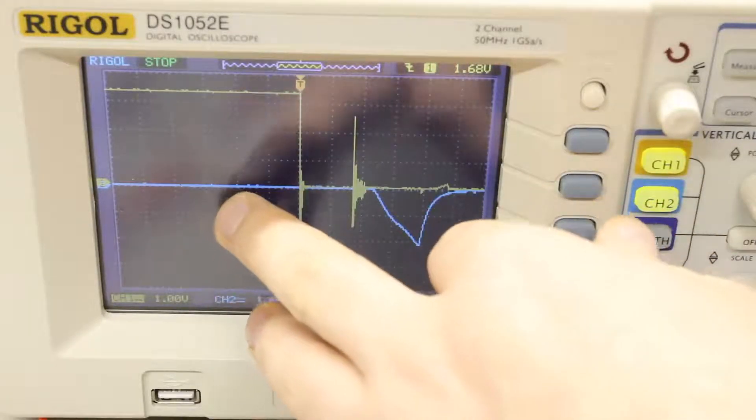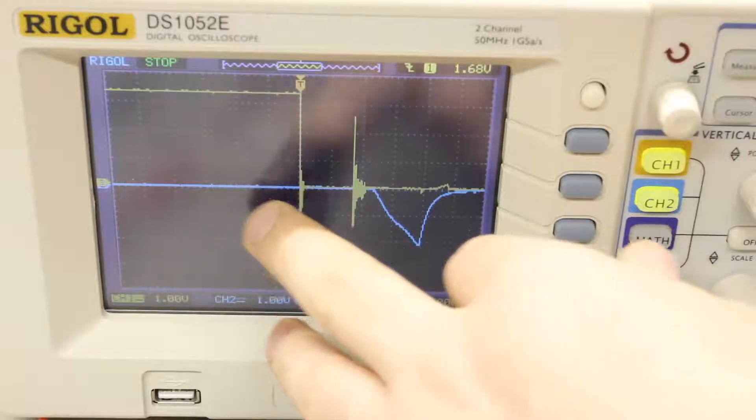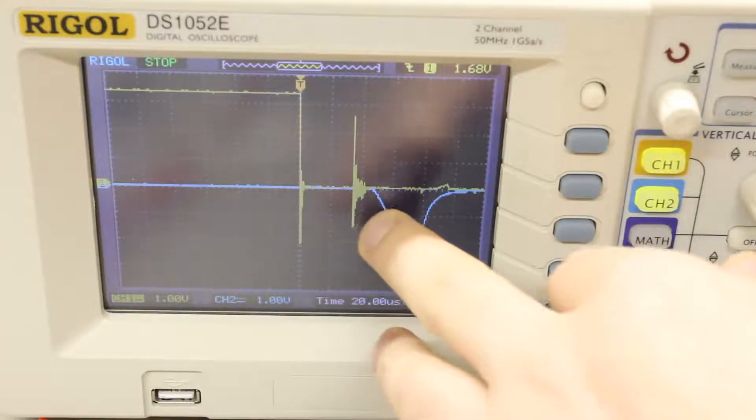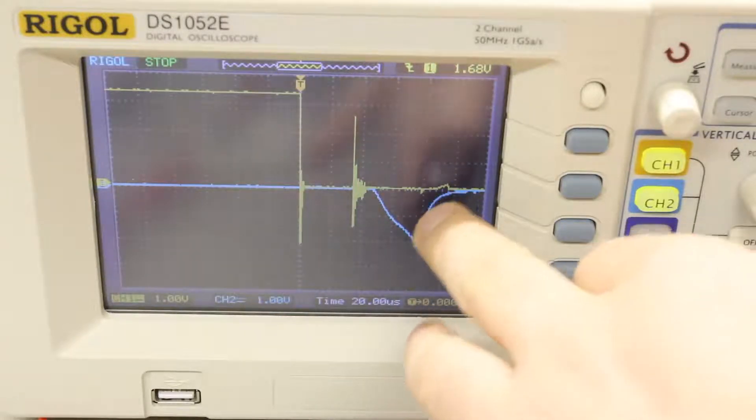The blue line is the light being emitted, and what we can see is that it gets emitted at this point. This peak here is where light is being emitted.